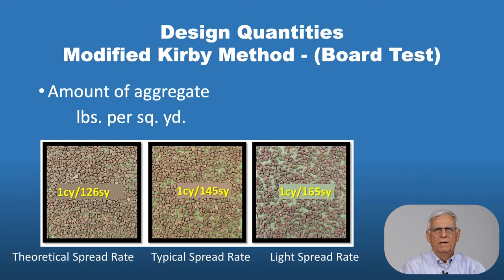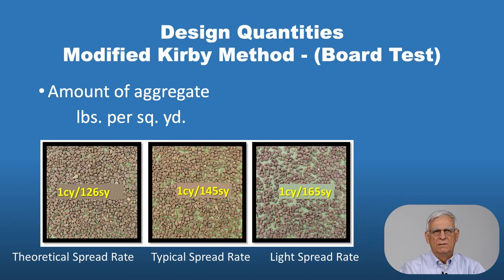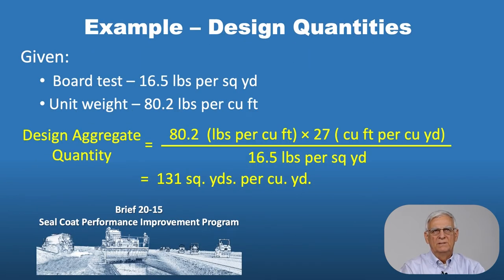Design quantities come out of the modified Kirby method using the board test, which is a very convenient test using project aggregates. You place aggregate on a one cubic yard flat surface — very often a half or quarter cubic yard — and weigh the aggregate on that surface area. The board test at 16.5 pounds per square yard with a unit weight of 80.2 pounds per cubic foot, substituted into the equation with proper unit conversion, yields 131 square yards covered by one cubic yard. This converts board test results to the rates commonly used in specifications and field communications.